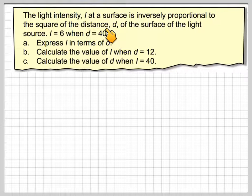The light intensity I of the surface is inversely proportional to the square of the distance, D, of the surface of the light source. I is equal to 6 when D is 40. Express I in terms of D. Calculate the value of I when D is 12 and calculate the value of D when I is 40.